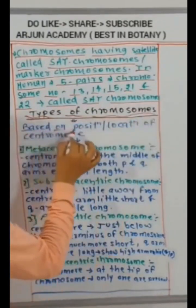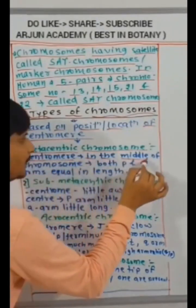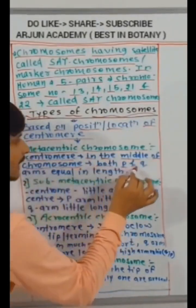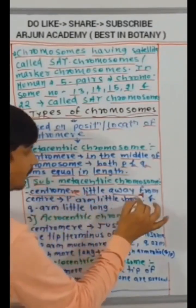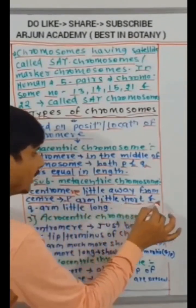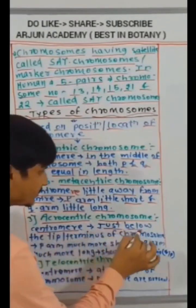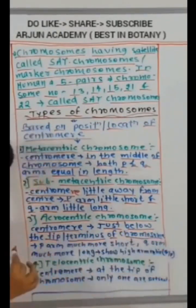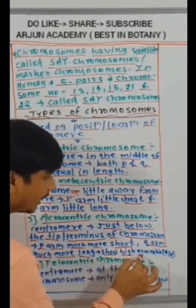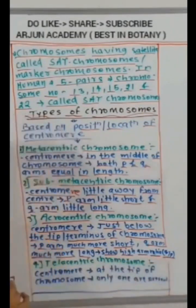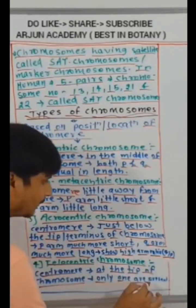Types of chromosomes based on position or location of centromere. Metacentric chromosome: centromere in the middle of chromosome. Both P and Q arms equal in length. Submetacentric chromosome: centromere little away from center. P arm little short and Q arm little long. Acrocentric chromosome: centromere just below the tip terminus of chromosome. P arm much more short. Q arm much more long. So high arm ratio that is Q by P. Telocentric chromosome: centromere at the tip of chromosome only one arm present.